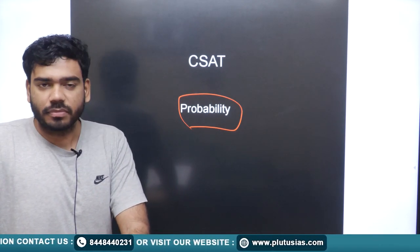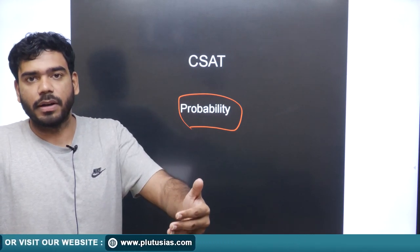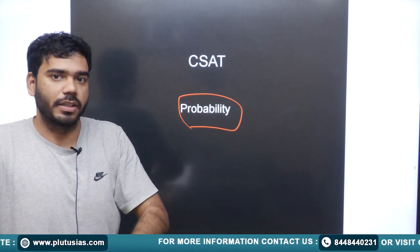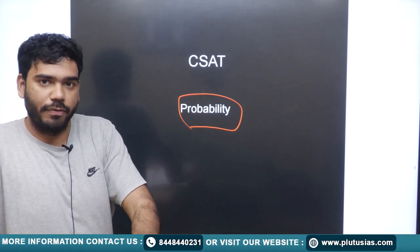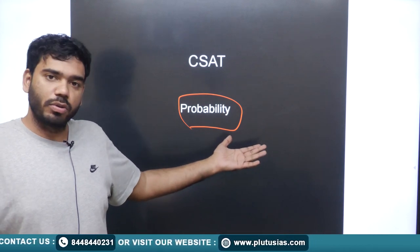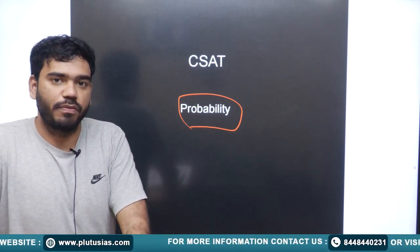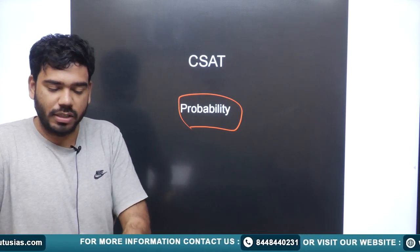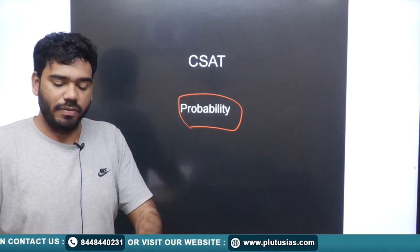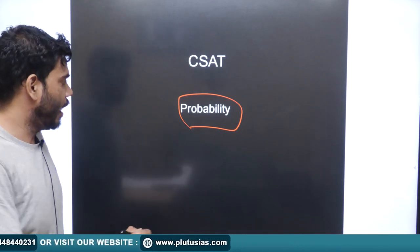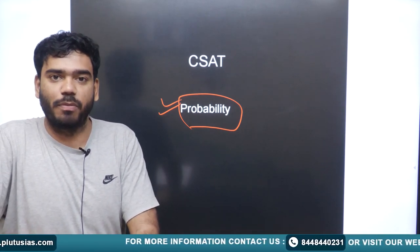If we observe the pattern of the CSAT paper for the last five to six years, the questions on probability being asked are almost five to ten questions. And if we include questions of permutation and combination and statistics also, there are at least 15 questions being asked continuously in the last five to six years. So the weightage of probability in the CSAT paper is very important.